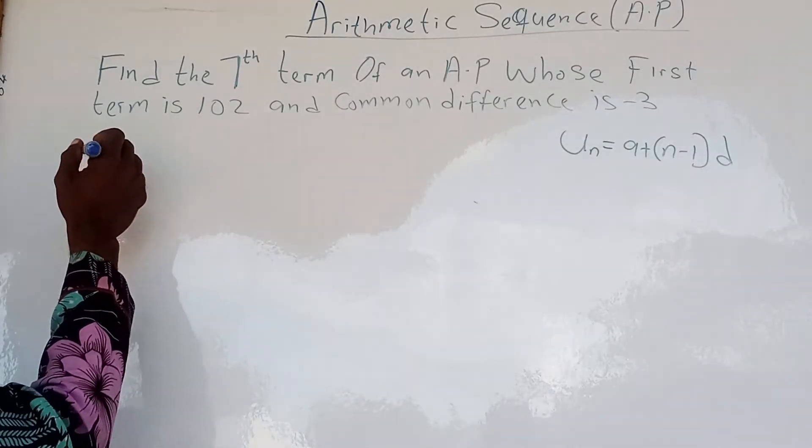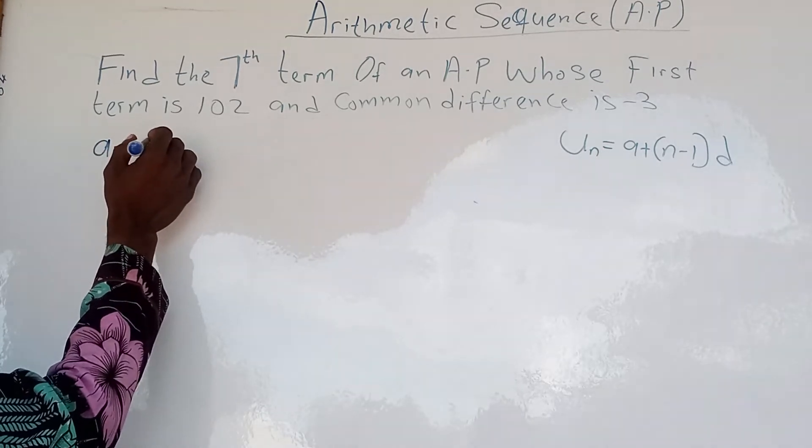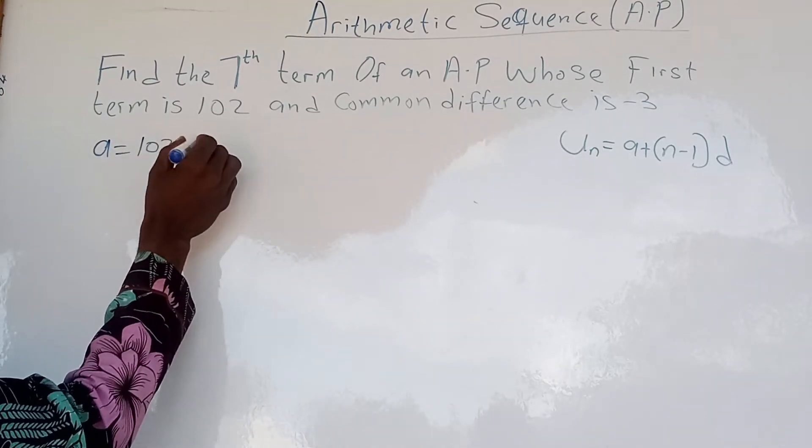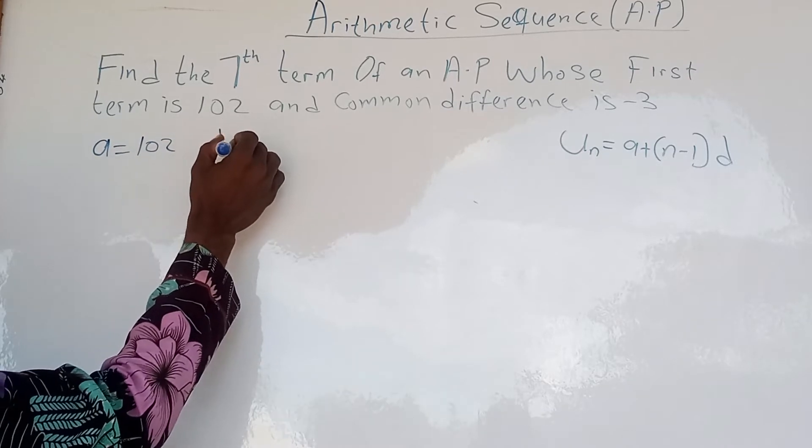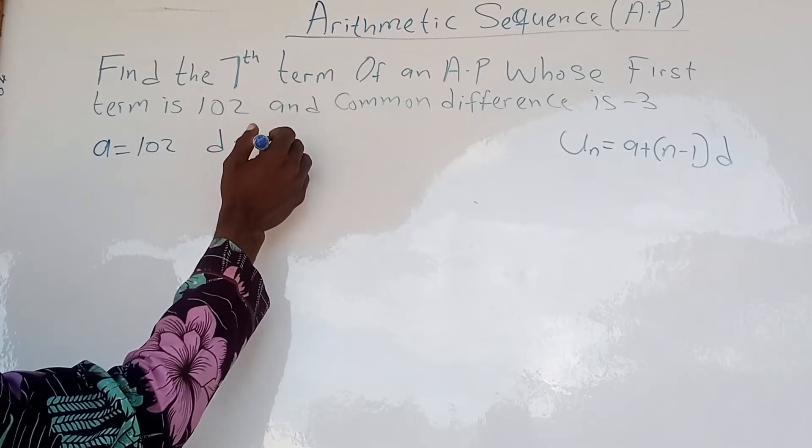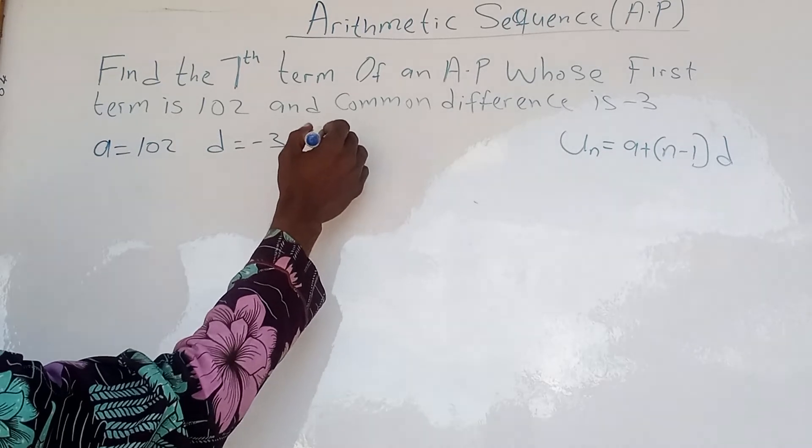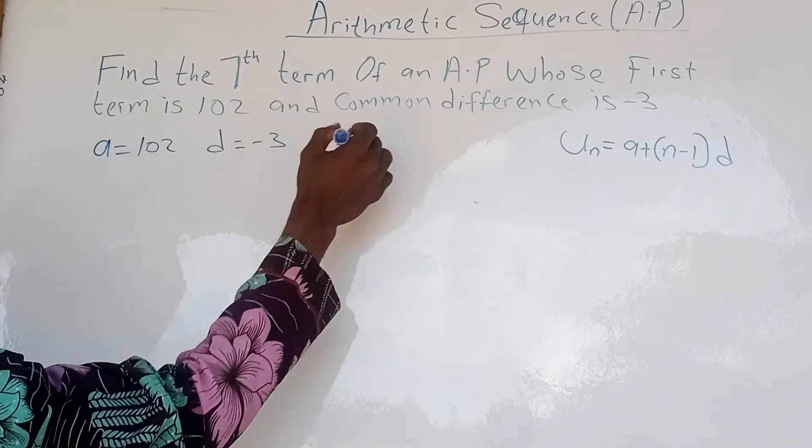Now, our first term A equals 102. Our D, which is our common difference, equals minus 3. Our N, the number of terms, equals 7.